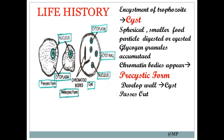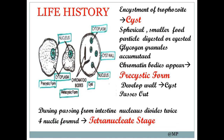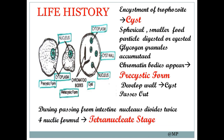After the development of the wall, it changes into a cyst, which passes out through the intestine. During passing from the intestine, the nucleus divides twice and four nuclei are formed, giving the tetranucleate stage. You can see how the precystic form changes into cyst formation in the diagram.